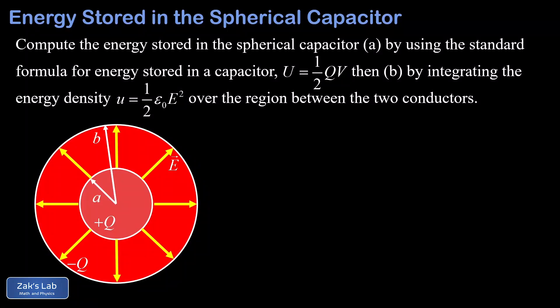This is the third and final video in a short series on the spherical capacitor. In this video we're going to compute the energy stored in the spherical capacitor in two different ways. First, we use the standard formula for the energy stored in a capacitor: U = ½QV. Then second, we approach the problem as a physical integral of the electric field energy density.